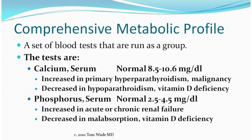The serum calcium can be increased in an endocrine disease called primary hyperparathyroidism. It can also be increased in malignancy. However, most of the time when a person has a high serum calcium found unexpectedly, it's simply due to hyperparathyroidism, which can be treated. We can also have a decreased serum calcium in hypoparathyroidism and in vitamin D deficiency. The serum phosphorus can be increased in acute or chronic renal failure, and decreased in malabsorption and vitamin D deficiency.